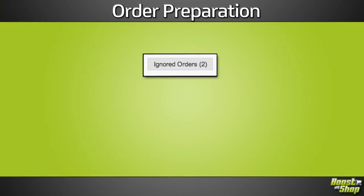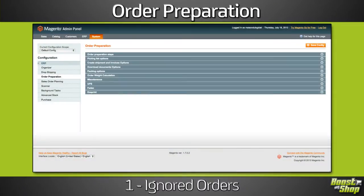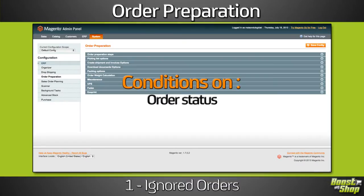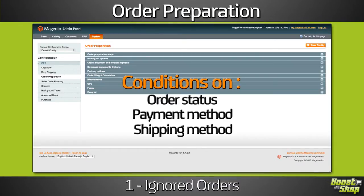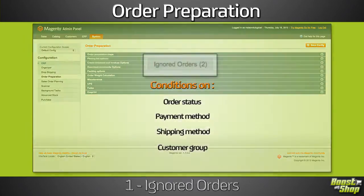Ignored orders. Using the configuration, you can set conditions on order status, payment method, shipping method, or customer group to decide if an order has to be fulfilled or not.